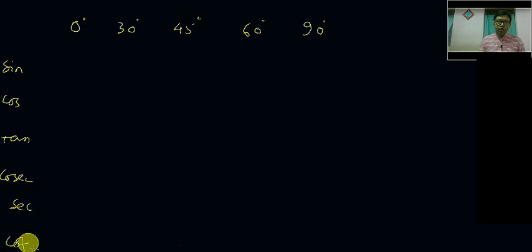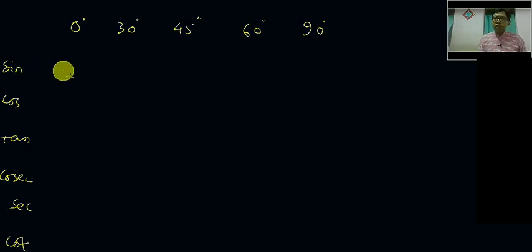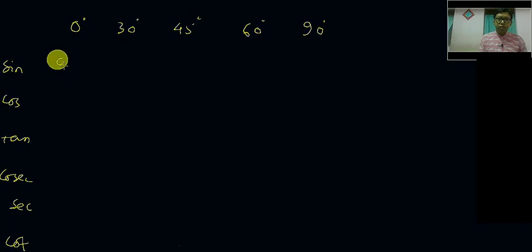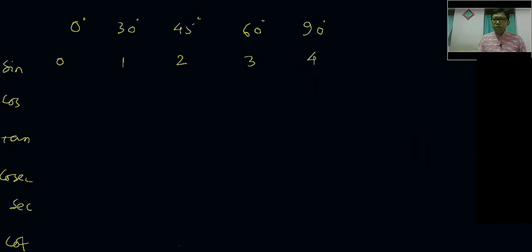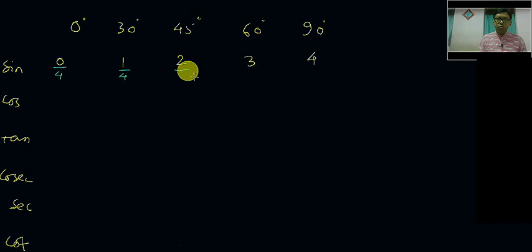This is very easy to remember. First of all, if you can remember only sin, then you can understand the other trigonometric functions very easily. So first you write 0, next 1, next 2, next 3, and 4. Now divide all these numbers by 4: 0 upon 4, next 1 upon 4, next 2 upon 4, next 3 upon 4, and finally 4 upon 4.